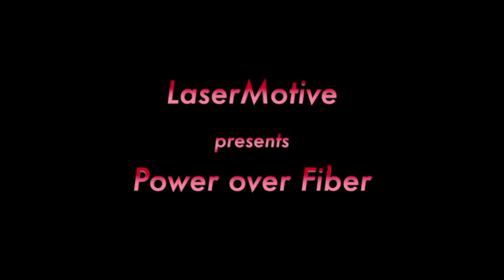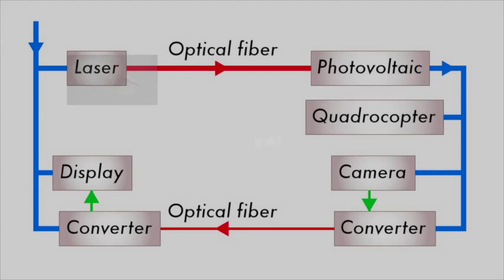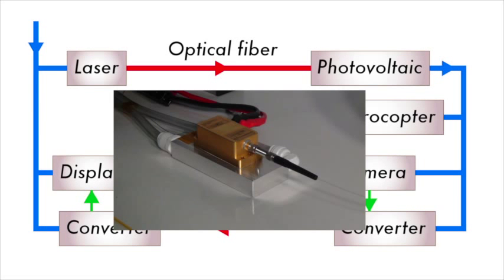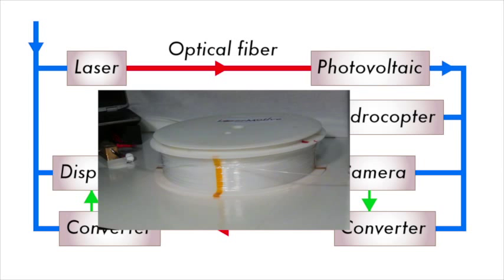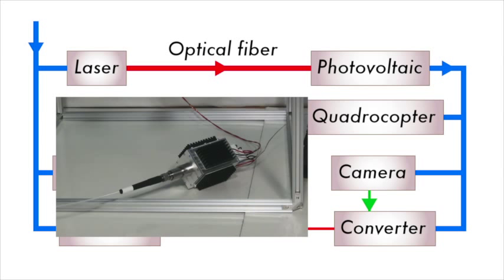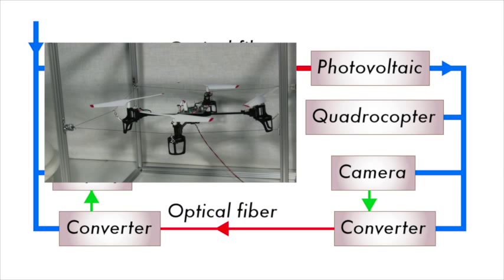LaserMotive's optical tether technology delivers power and data using lightweight fiber optic cables. This laser converts electricity into light, which travels through the clear fiber optic cable to a photovoltaic receiver, which converts the light into electricity used, in this case, to power motors in a quadcopter.